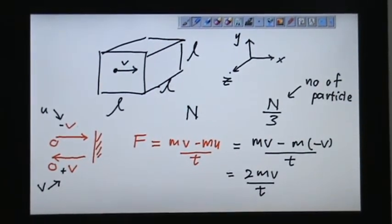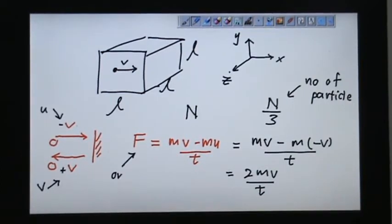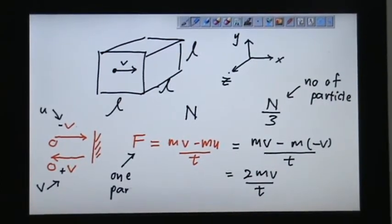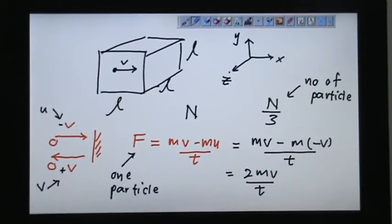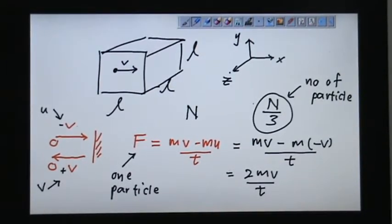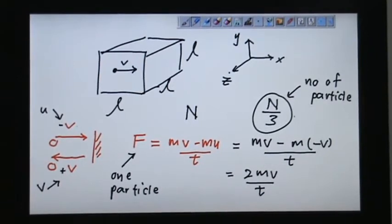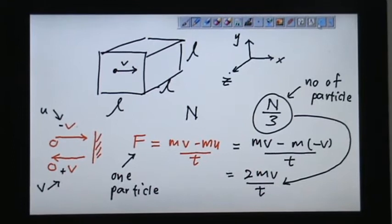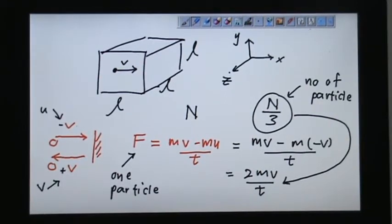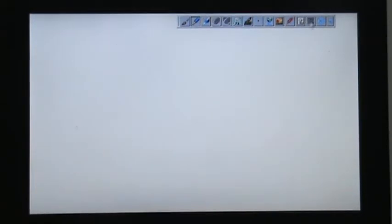But this is only for one particle. So if there are this number of particles, N over 3, I would combine this with this. Make sure you copy this before I flip to another page.